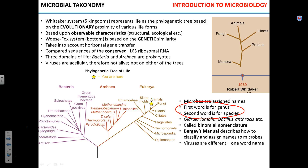First name is for genus, second for species. You can see Giardia lamblia — Giardia is the genus, lamblia is the species. Bacillus anthracis causes anthrax. There's also Bacillus cereus and Bacillus subtilis — other species of the same genus. That's binomial nomenclature.